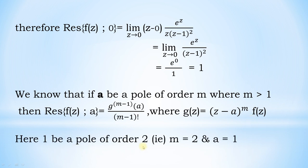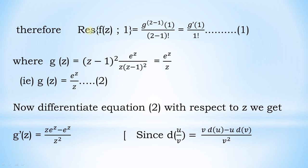Here z = 1 is a pole of order 2. Therefore m = 2 and a = 1. Therefore the residue of f(z) at 1 equals g^(2−1)'(1) divided by (2−1)!, that is g'(1) divided by 1!. Let us call this equation number 1. And here g(z) = (z−1)² · f(z).